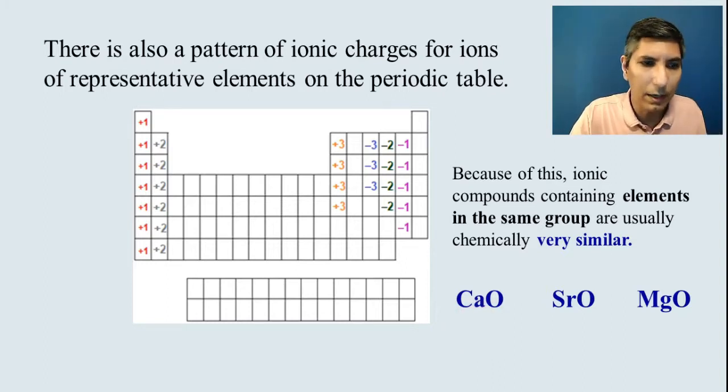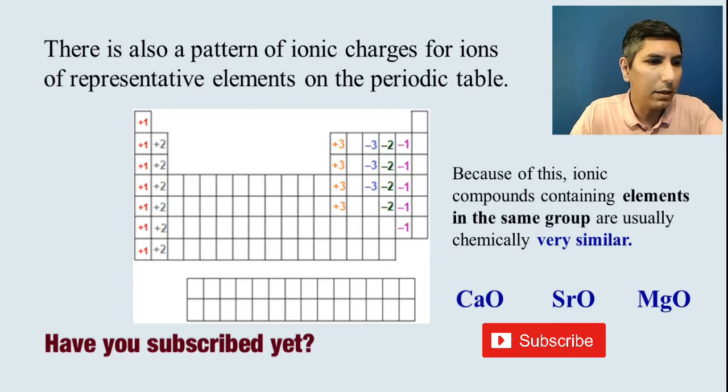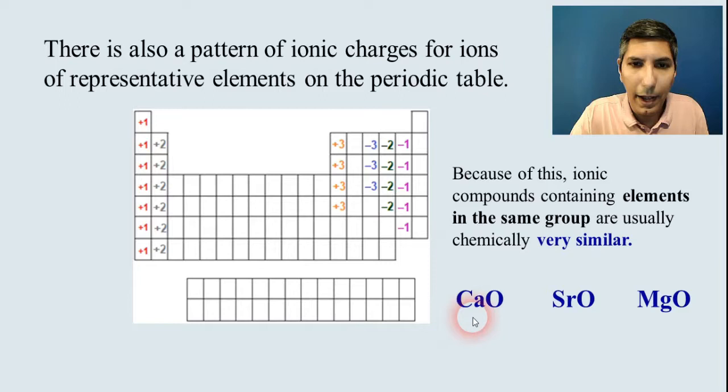But generally speaking, if you look at them, how they behave chemically, pretty close to each other chemically. And that's because they have these same groups. You have calcium, strontium, magnesium, they're all in the same group. So they're going to behave very similar to each other chemically.